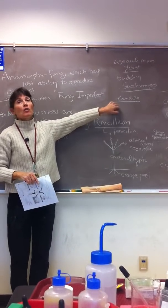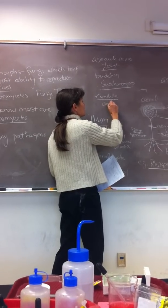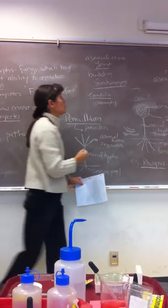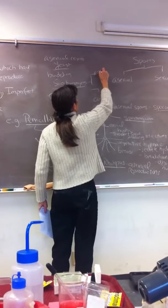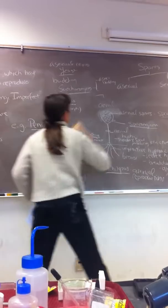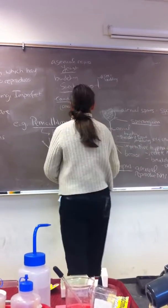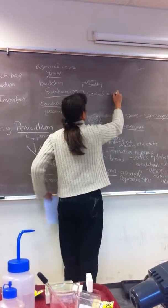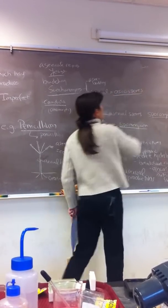Now, Candida albicans is also an anamorph. So Candida is only going to reproduce by asexual reproduction. Saccharomyces, however, has both asexual by budding, and they reproduce sexually. So you'll have a separate slide.